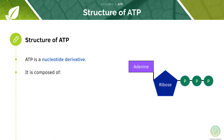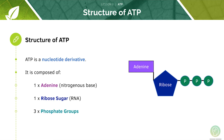ATP is made up of the nitrogenous base adenine, which is the same as found in DNA and RNA. It also has a ribose sugar, like RNA. What makes it unique is that it has three phosphate groups.